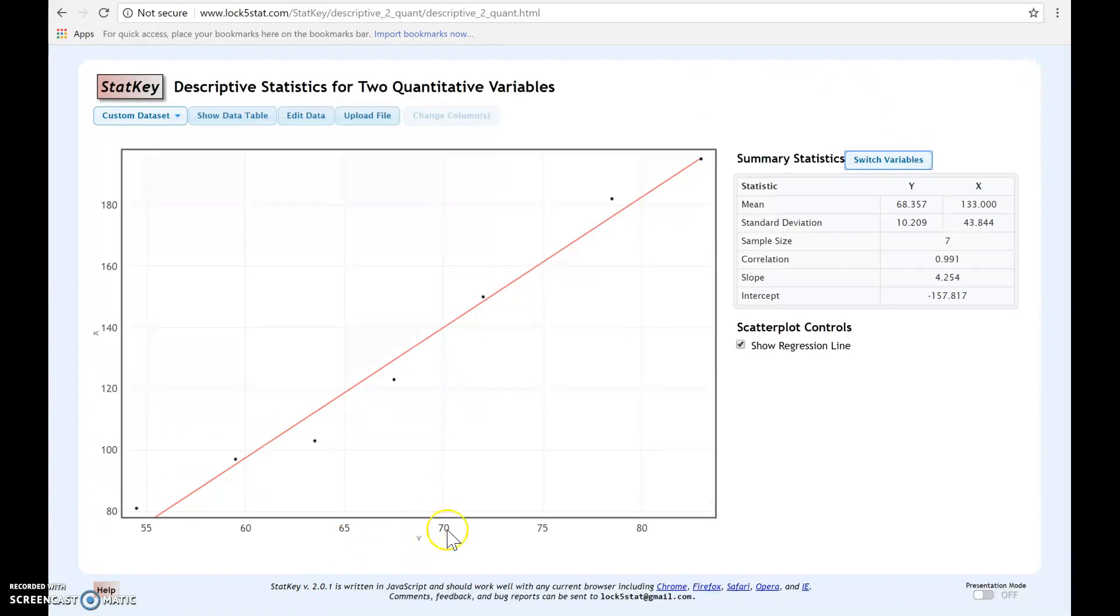What you can do is come up here and click Switch Variables. And it will then put, now we have temperature on the y and chirps. We now have temperature down here and chirps here.